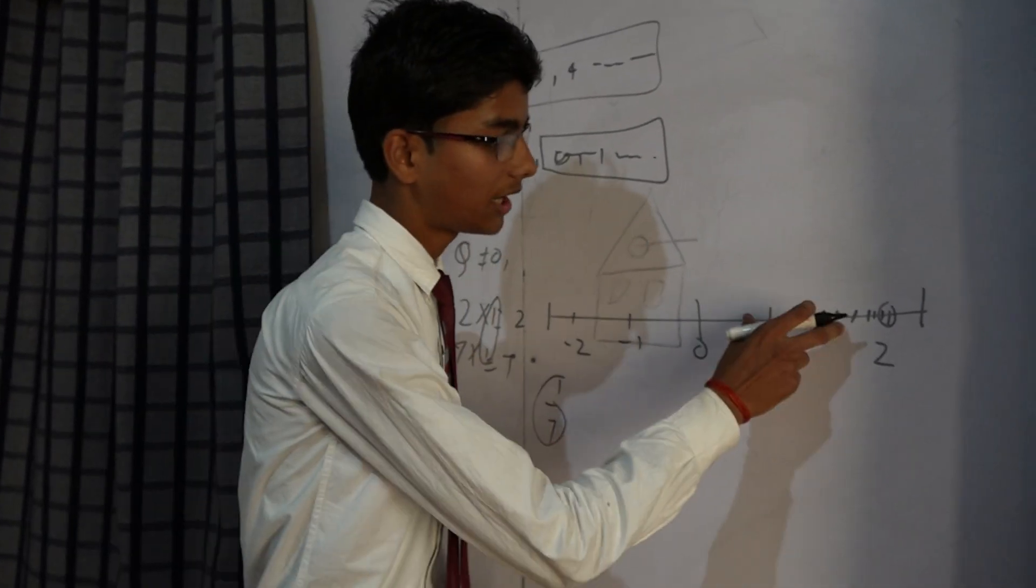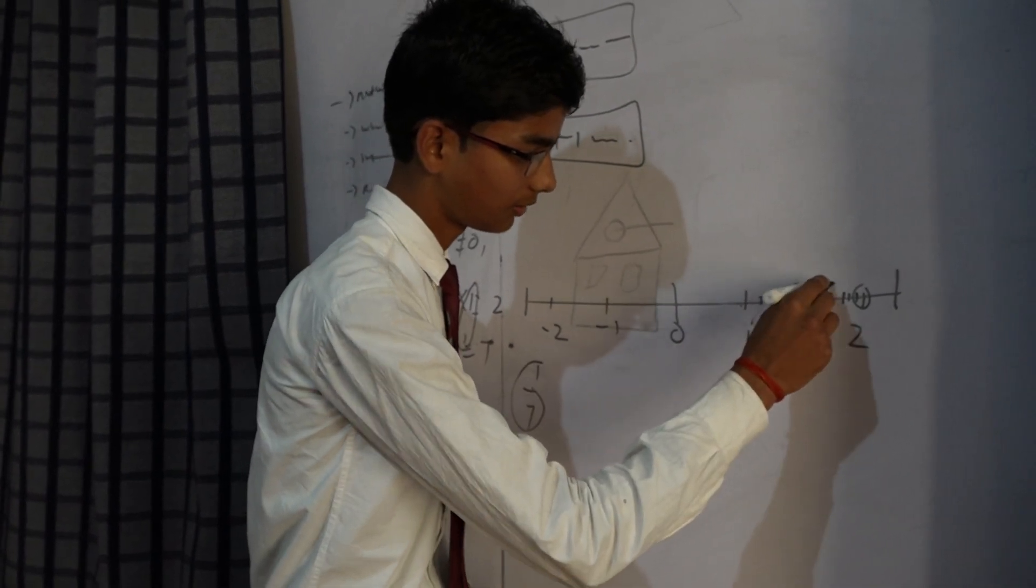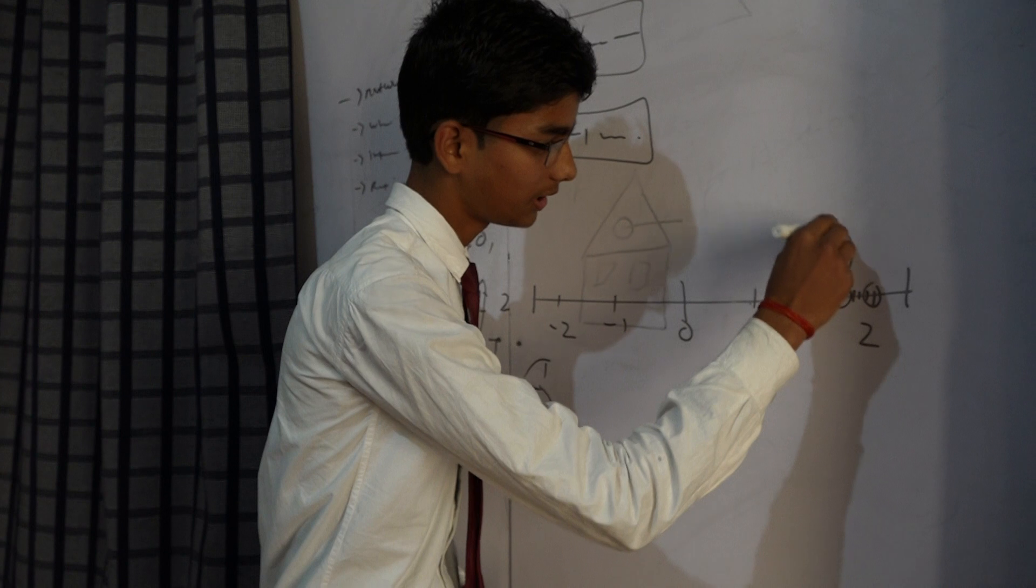So, take 7 equal parts between 1 and 2. 1, 2, 3, 4, 5, 6, 7. Here, 1 by 7 is included.